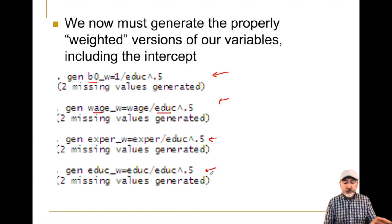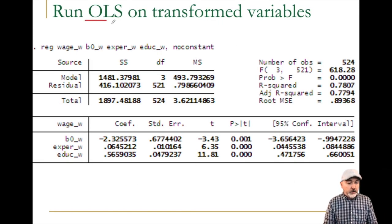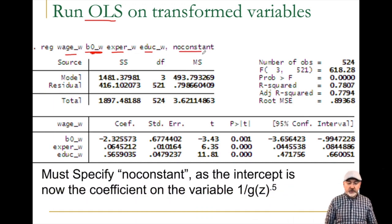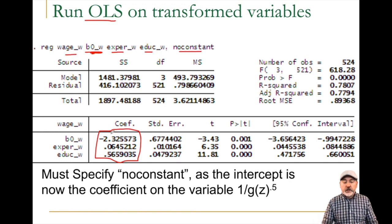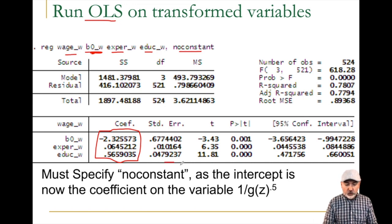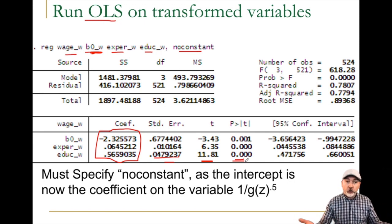We also generate work experience divided by square root of education, and education divided by its own square root — which is just the square root of education. Because we divided everything by the same term, we're not changing the meanings of the coefficients — we'll still interpret them as in OLS. Then we run an ordinary least squares model on our weighted variables: weighted dependent variable as a function of weighted experience, weighted education, and the weighted intercept term, using the no constant option.